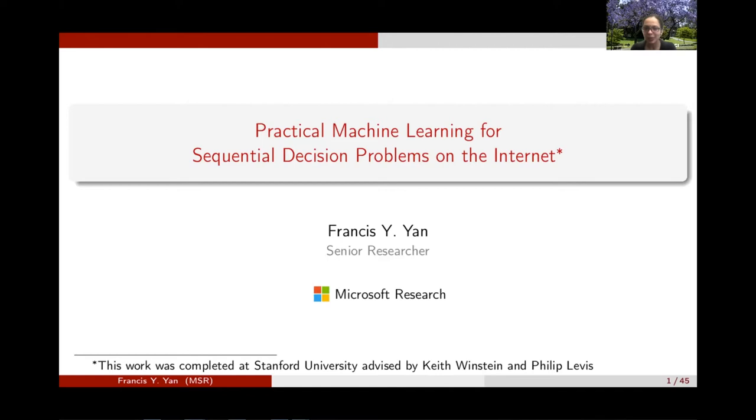He's a senior researcher at Microsoft Research and Azure for Operators, and his research focuses on practical machine learning for networking. He completed his PhD in computer science at Stanford University and received several awards including the IRTF Applied Networking Research Prize, the USENIX NSDI Community Award, and the USENIX ATC Best Paper Award. Today he'll be talking to us about Applied Machine Learning in Network Systems.